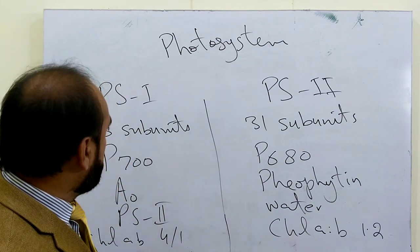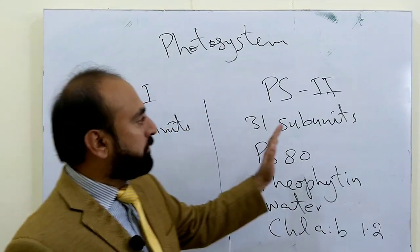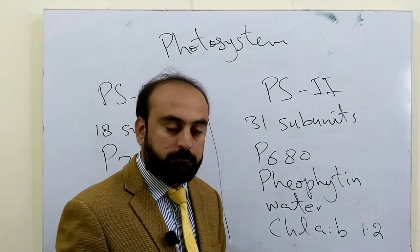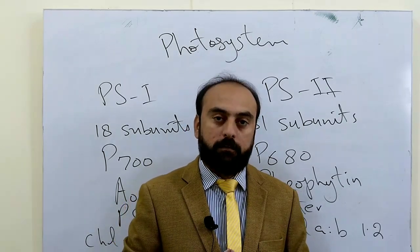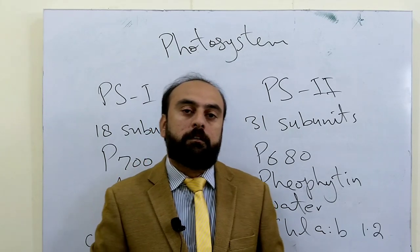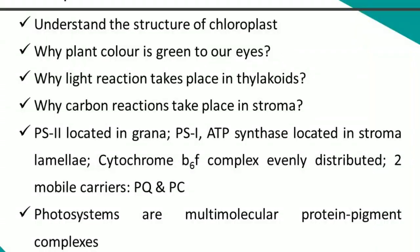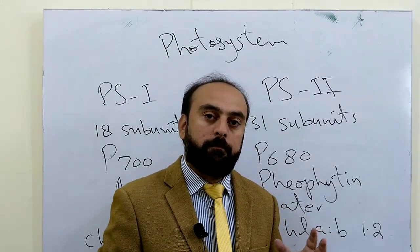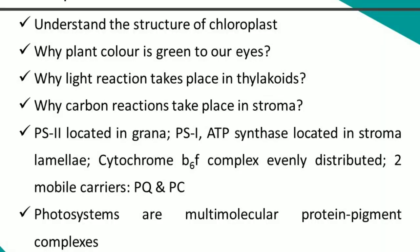Photosystem 2 is located in the grana thylakoids whereas photosystem 1 is located in the stroma lamellae. So this covers the site of photosynthesis, the ultrastructure of chloroplasts, why light reactions take place in thylakoids, why dark reactions take place in the stroma, the structure of photosystems, the role of cytochromes and mobile carriers plastoquinone and plastocyanin, and the differences between photosystem 1 and photosystem 2.